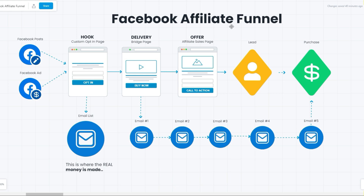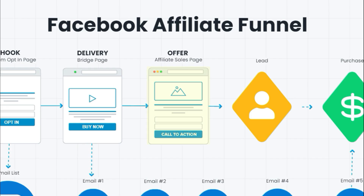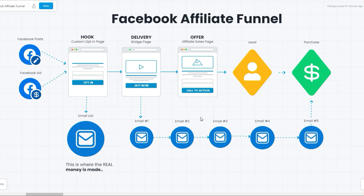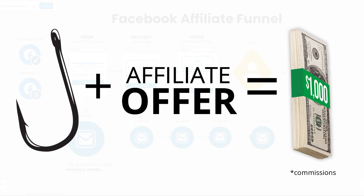The main thing to remember is your affiliate offer could be anything. As long as you have this funnel process in place, you'll be able to start getting traffic and sales for your affiliate offers. In the next lesson, we'll talk about how to pick the right offer for your Facebook affiliate funnel, because picking the right offer with the right hook gives you more chances of getting sales from your front-end advertising.